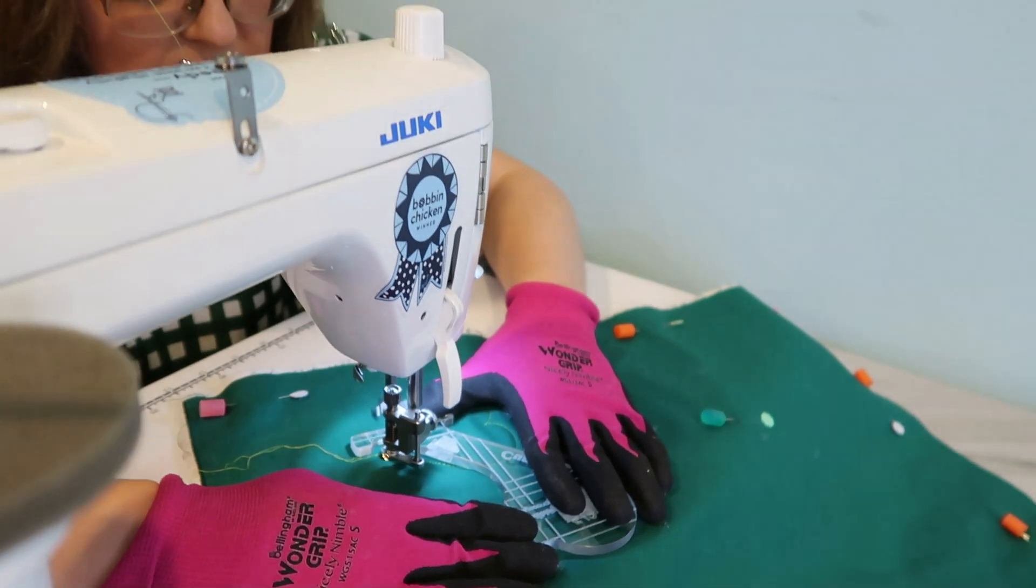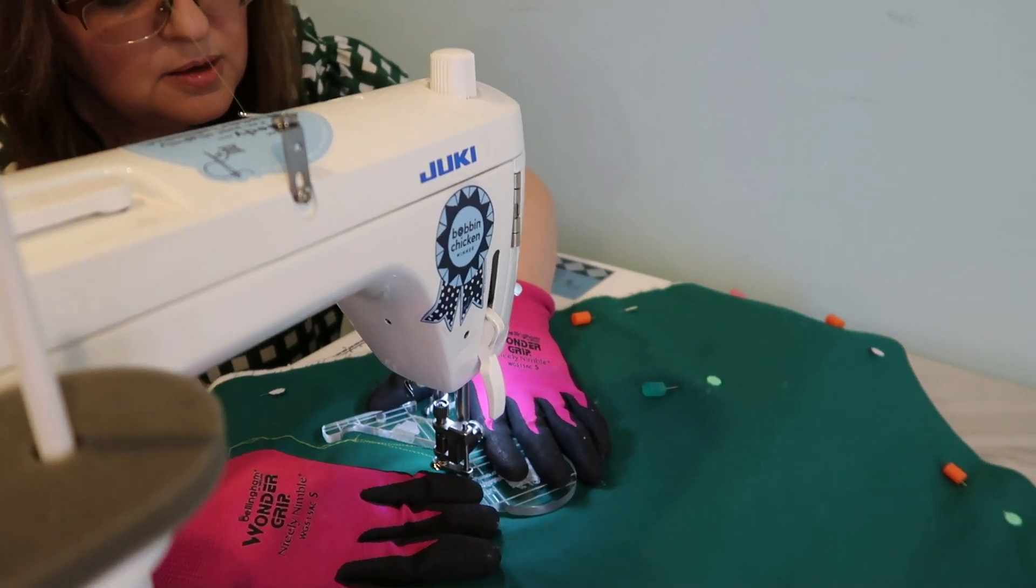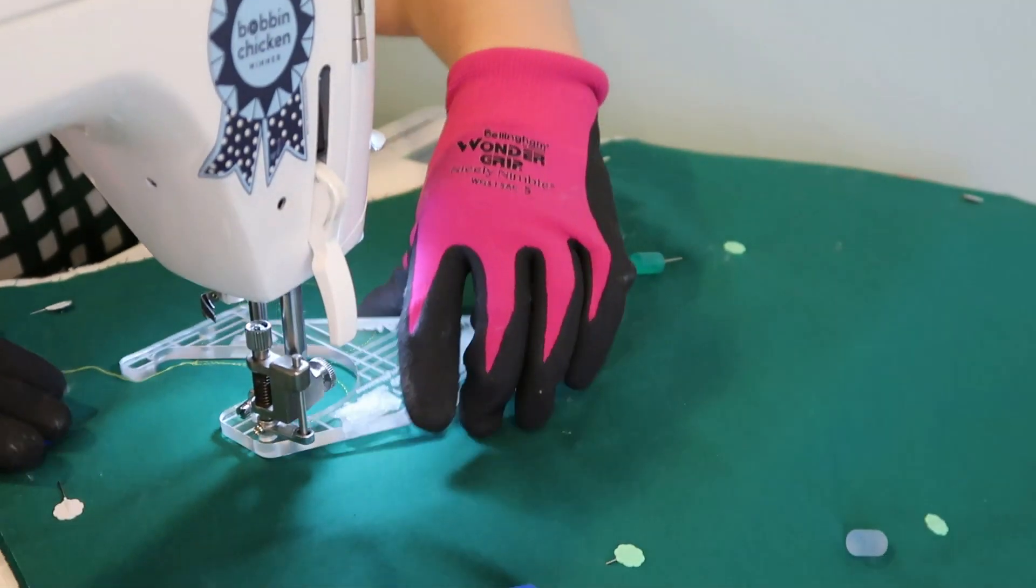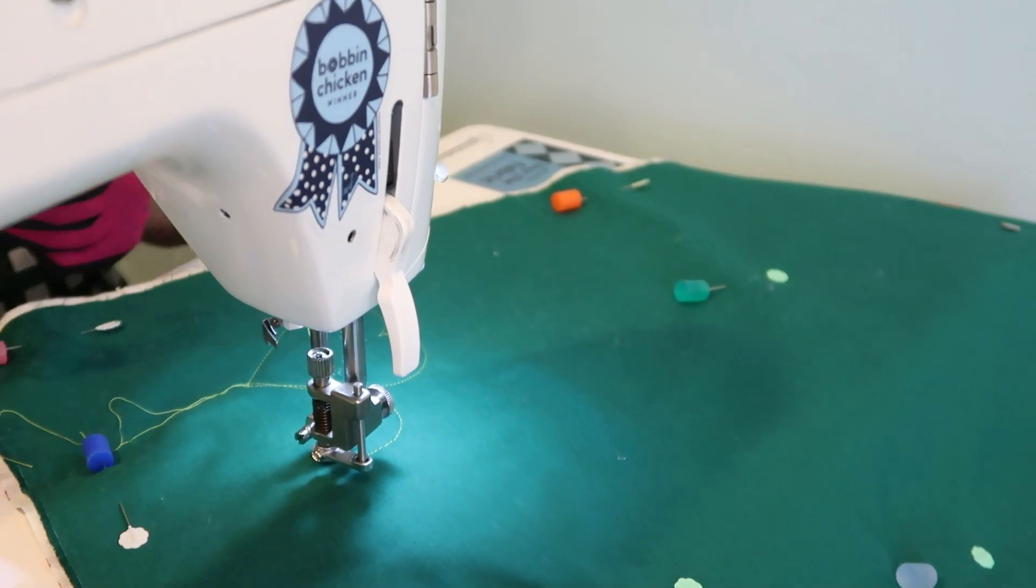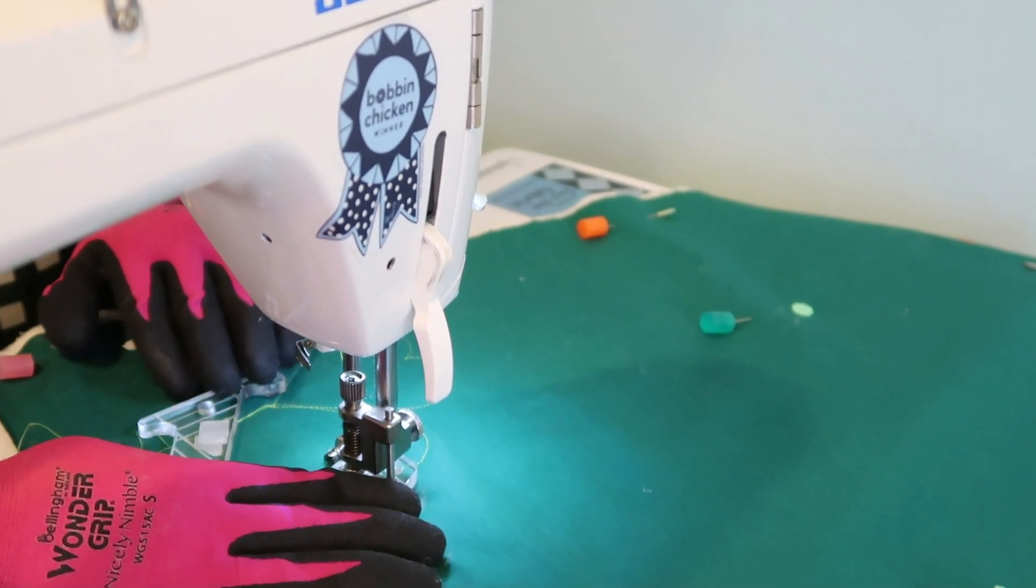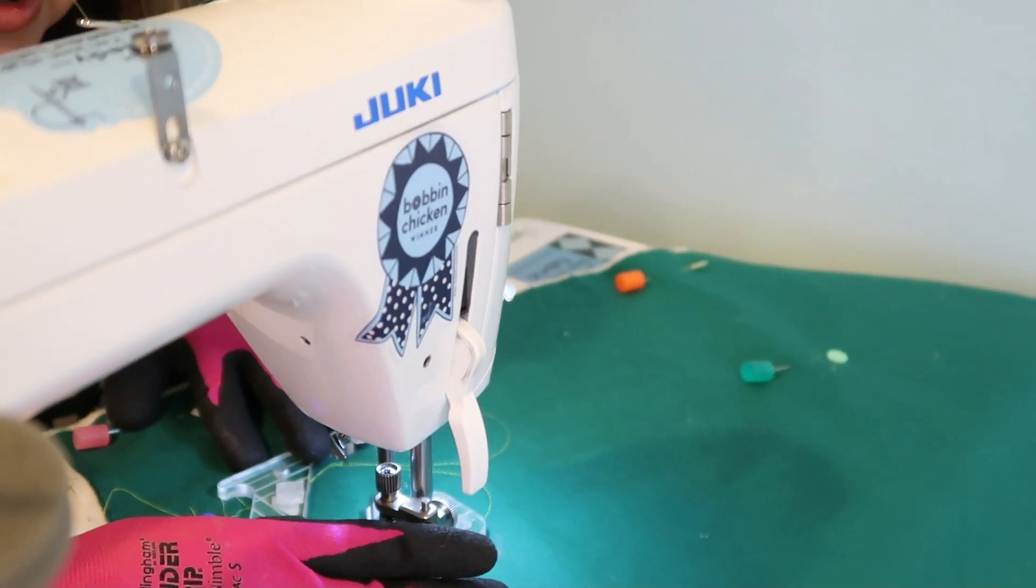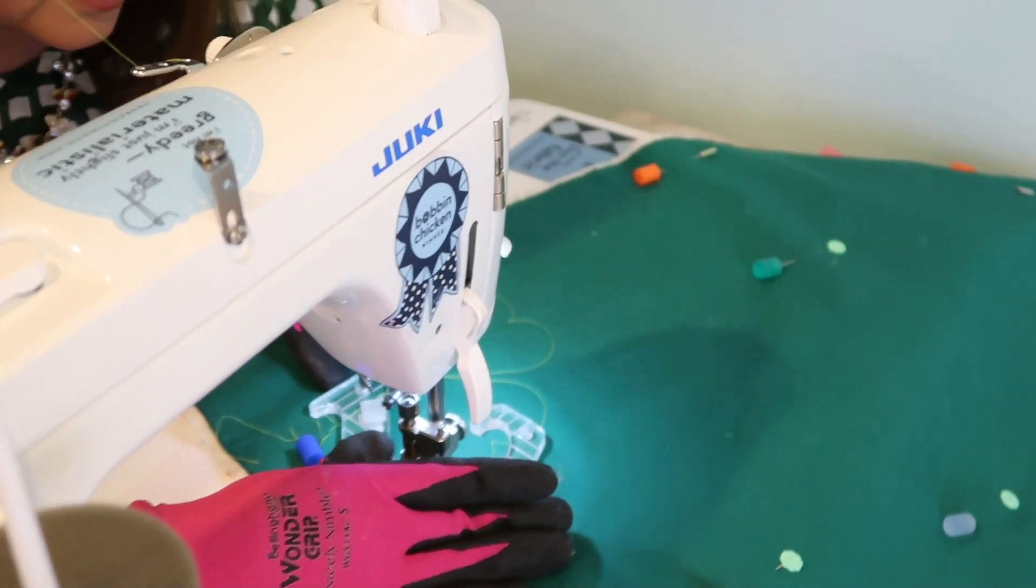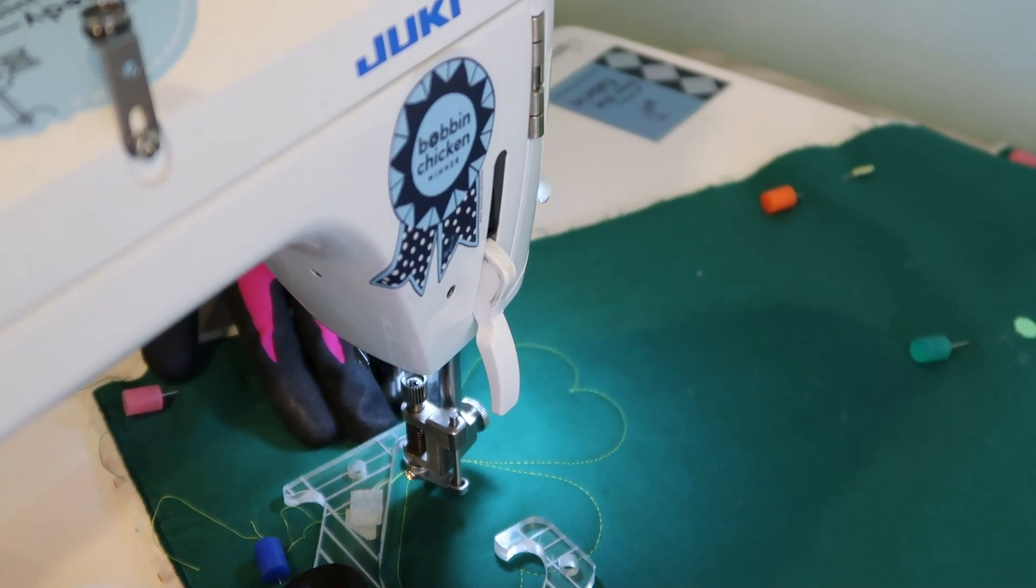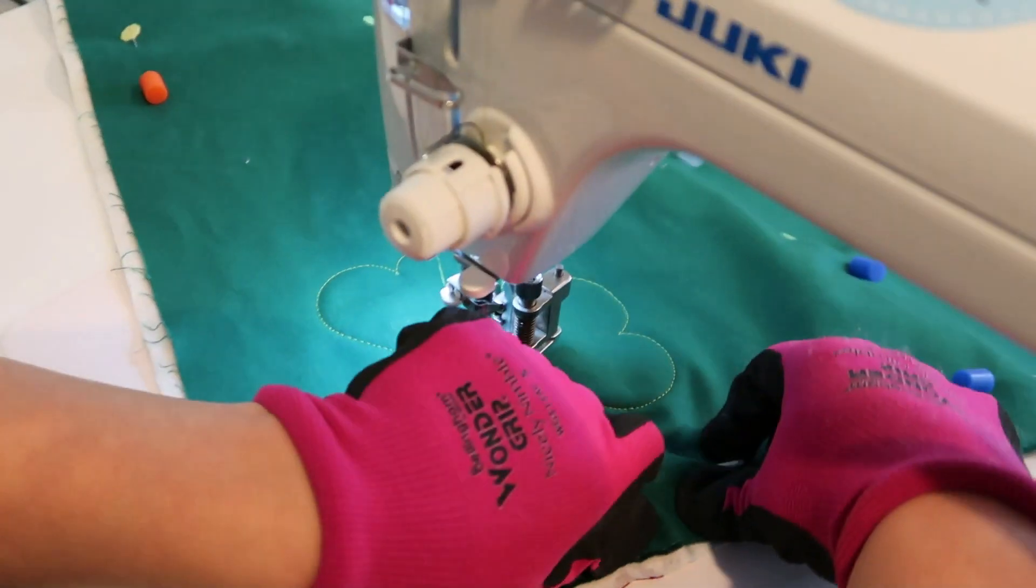And we're just going to hold it really steady. And of course when you're doing it, you'll use a thread that blends in a little better. I'm wanting you to be able to see it, so we've got this lime green which is what I used quilting the other one where I had lighter fabric and it was really pretty. Just remember, just hold steady, but you don't want to hold too firm. You want to be able to slide it, it's about finding that balance.